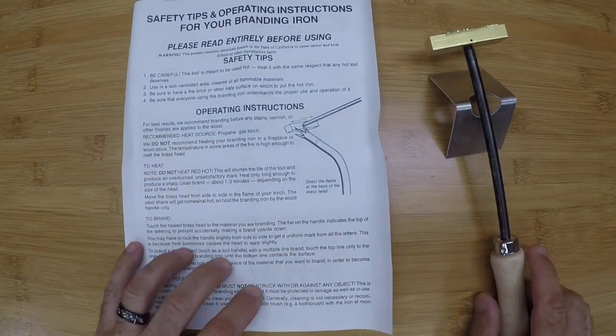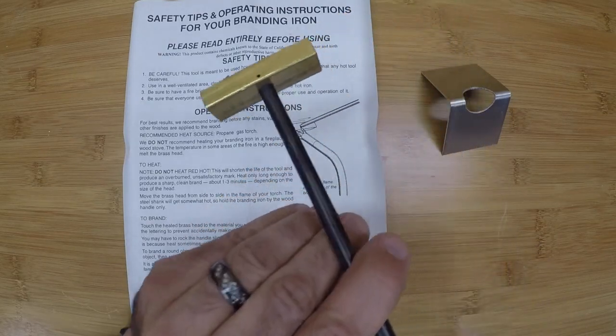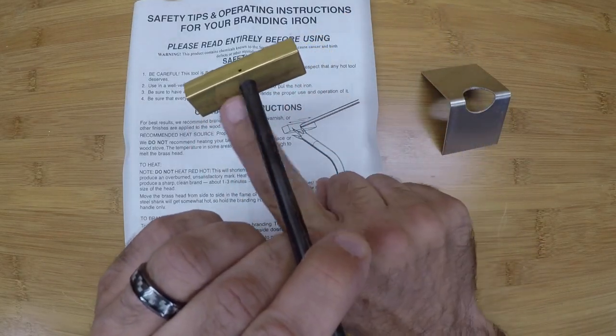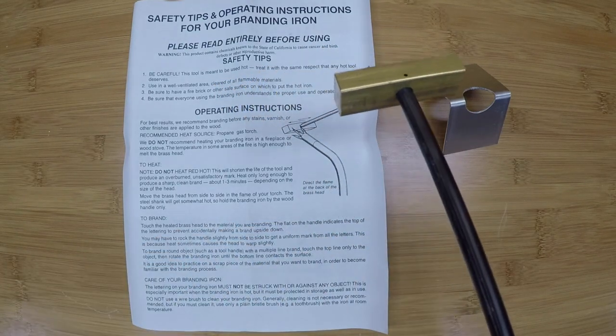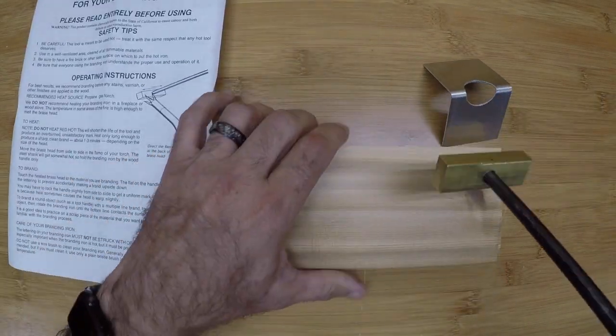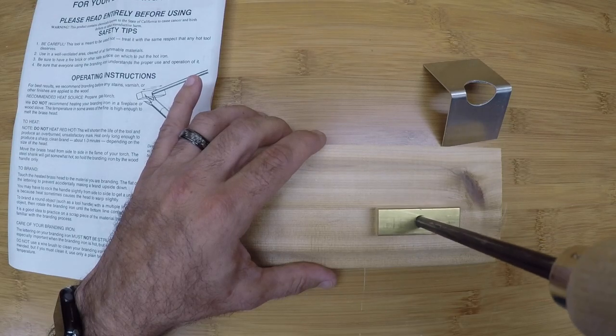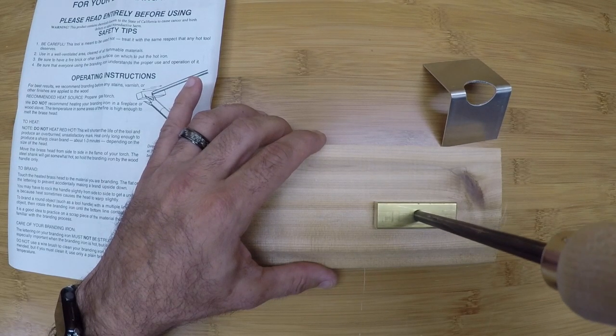So basically, I'd read on this before I purchased it. We're going to heat this iron with the torch on the backside for about one to three minutes. And then basically we will take the board and we will push it into the board, rocking it slightly.